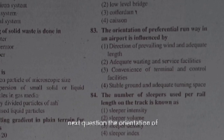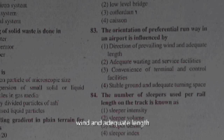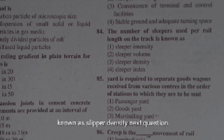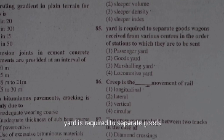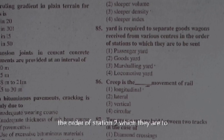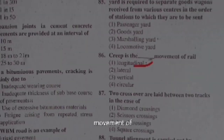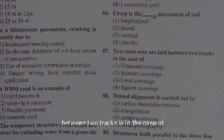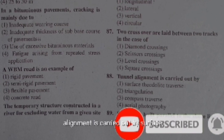The orientation of a preferential runway in an airport is influenced by the direction of the prevailing wind and adequate length. The number of sleepers used per rail length on a track is known as sleeper density. A marshalling yard is used to separate goods wagons received from various centres in the order of the station to which they are to be sent. Creep is the longitudinal movement of rail in a track. Two crossovers laid between two tracks is the case of scissors crossing.